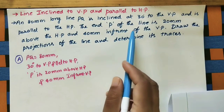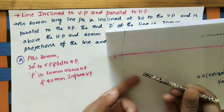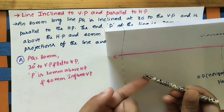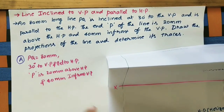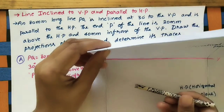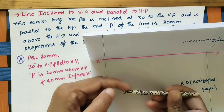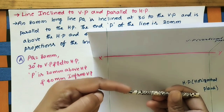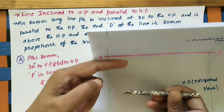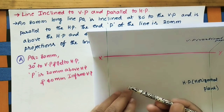The end P of the line is 20 mm above HP and 40 mm in front of VP.